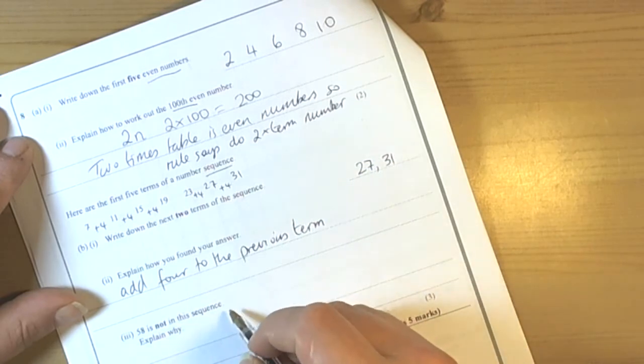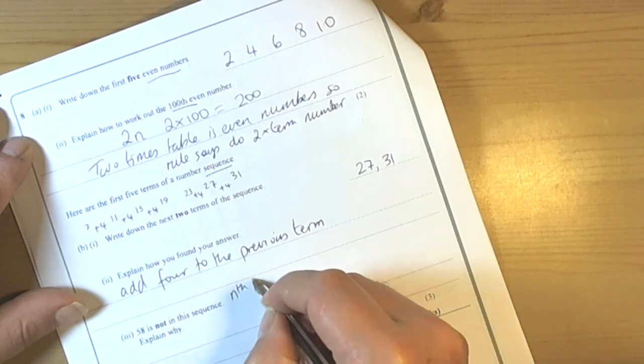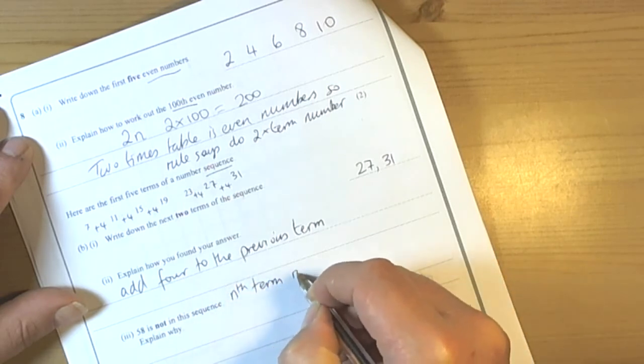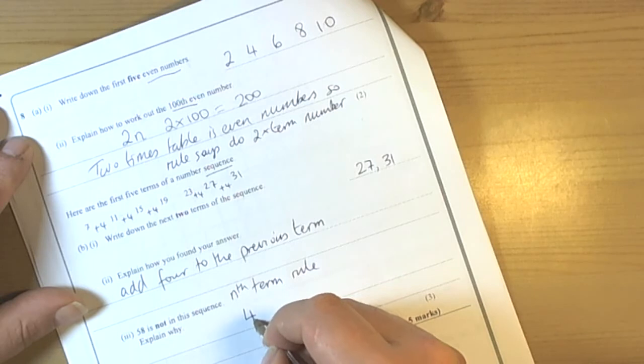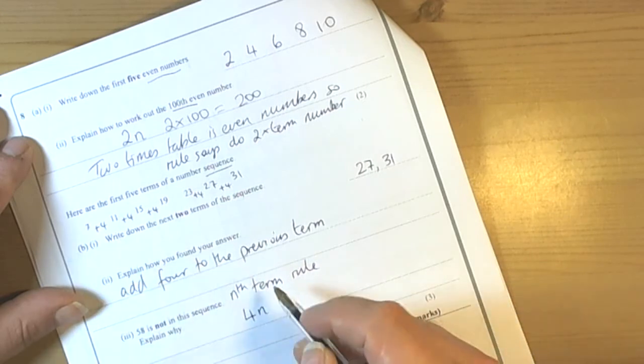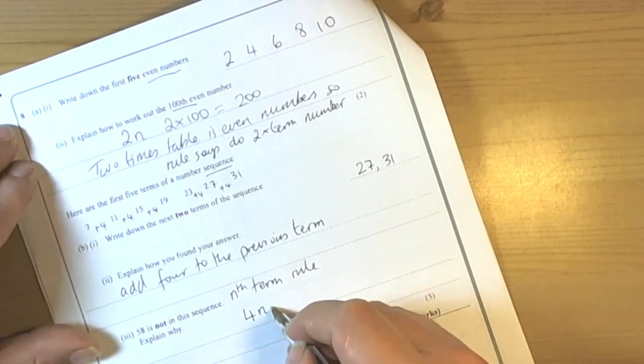Another way of explaining this could be to work out the nth term rule for the sequence. So it's always worth knowing how to do this because this comes up in the exams as well. So for this sequence we've got it's going up in 4s then it involves the 4 times table which has the rule 4n. But we can see the first term was 7. So to get the 4 up to the 7 because the 4 times table would be 4, we have to add 3. So the nth term rule for this sequence is 4n plus 3.